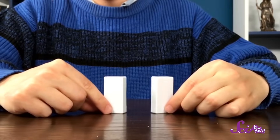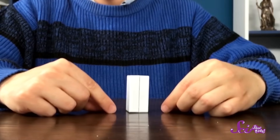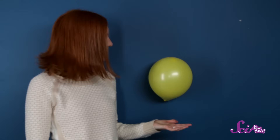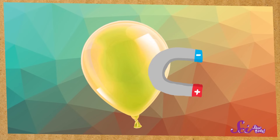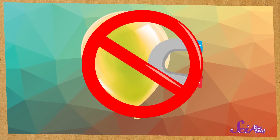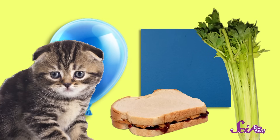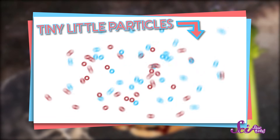In fact, when I move them even closer together, they attract each other so much that they stick — just like the balloon stuck to the wall. But I didn't see any magnets on my balloon, and that's because there aren't any. The balloon, the wall, and everything else in the universe is made of tiny little particles.